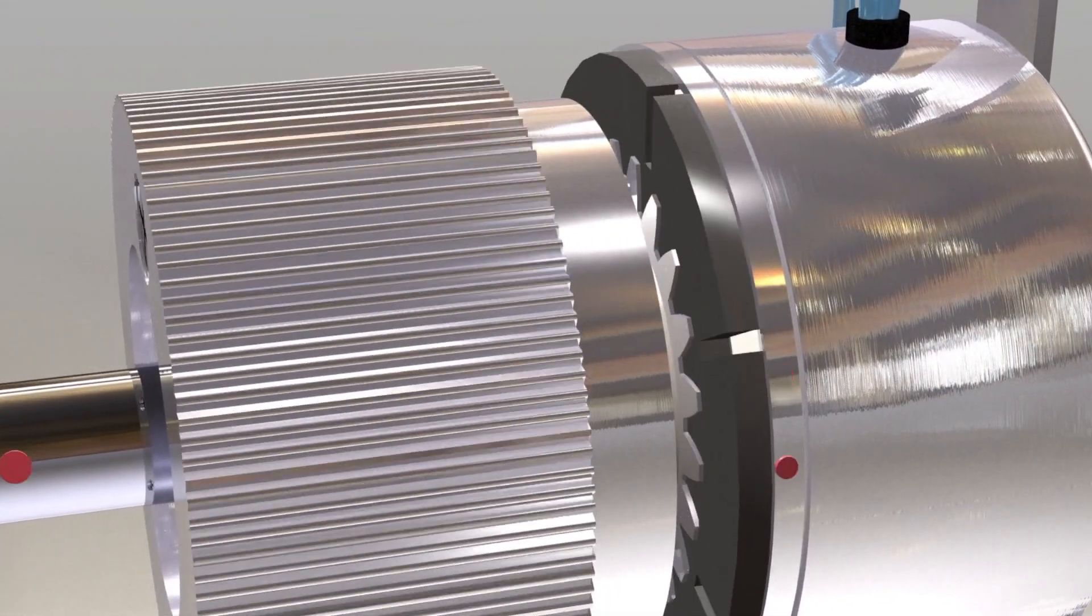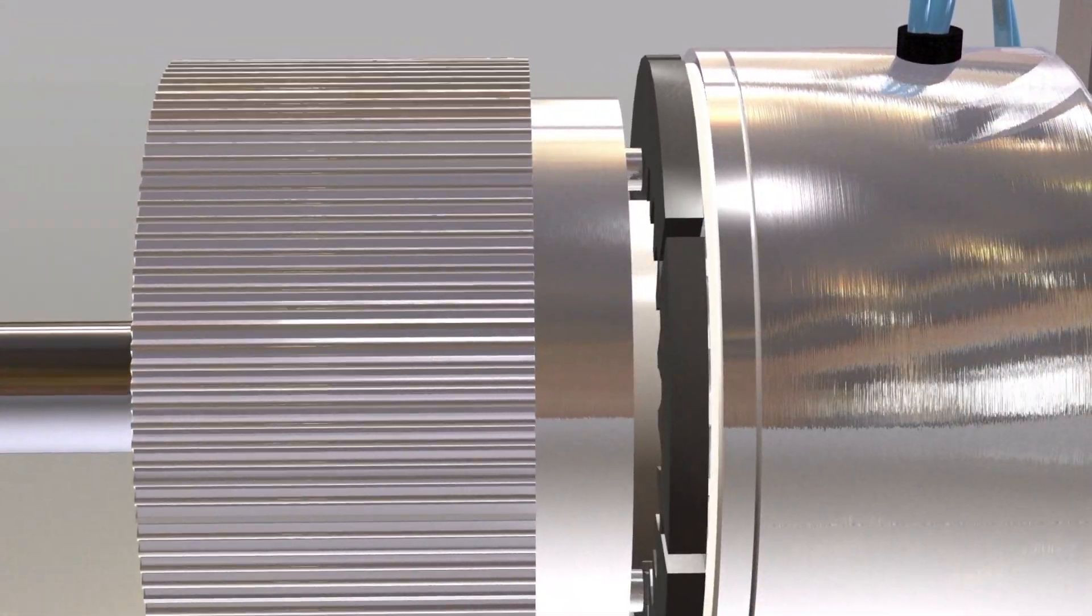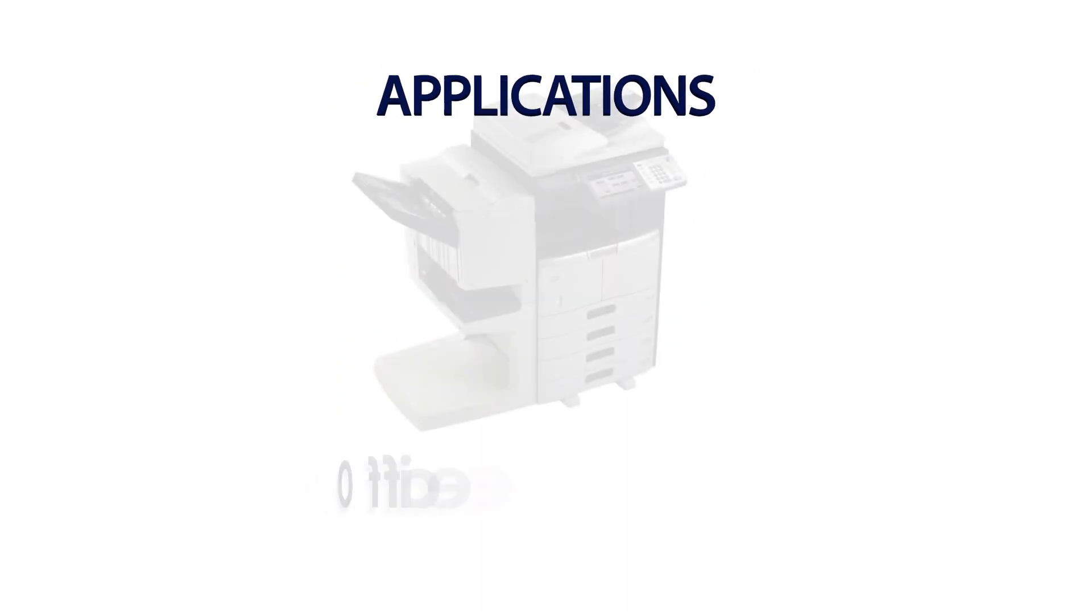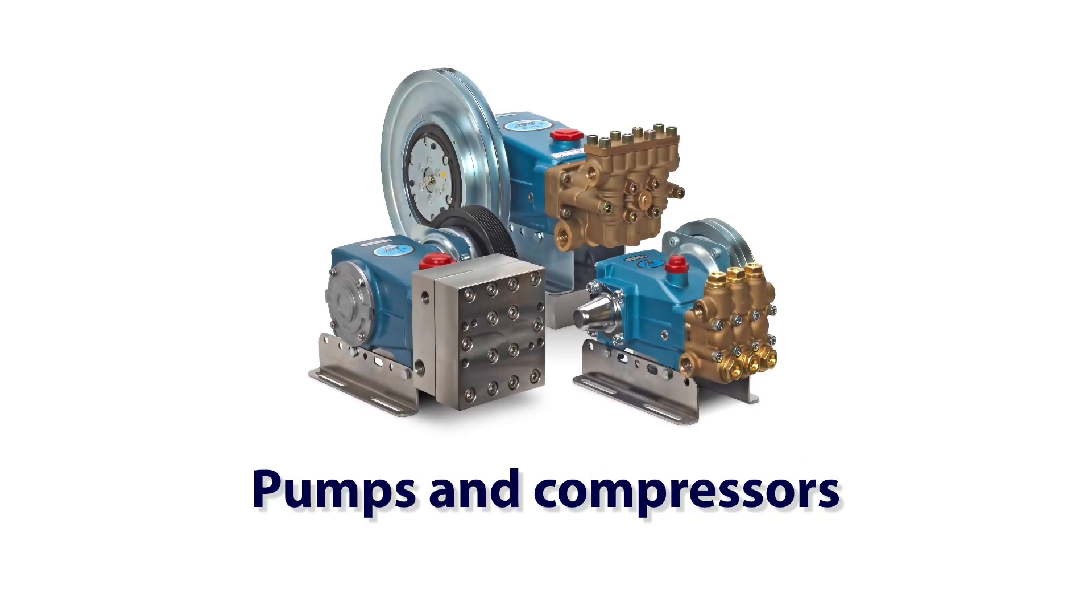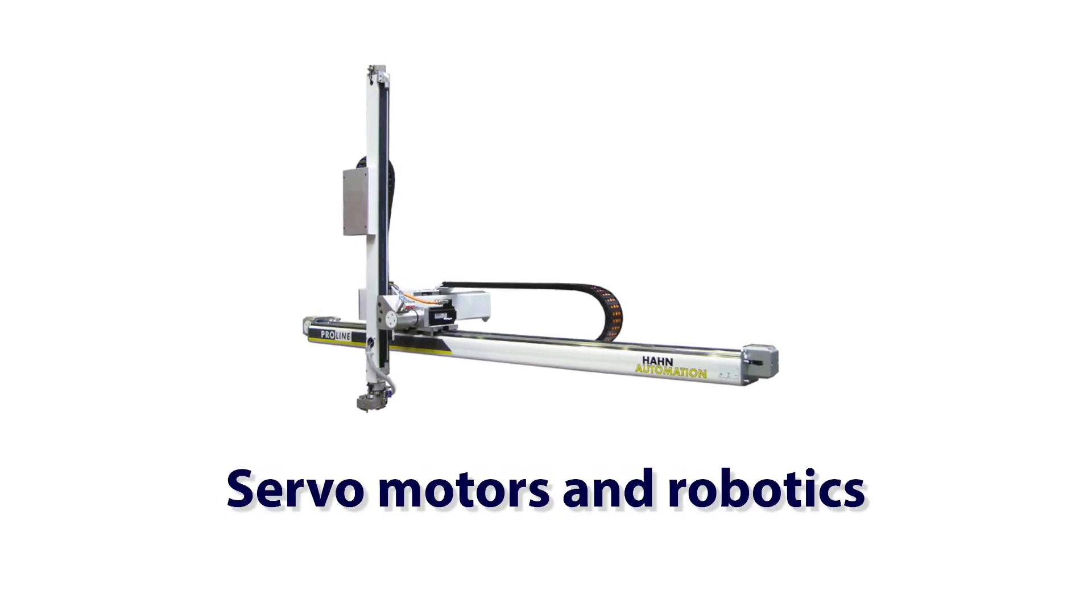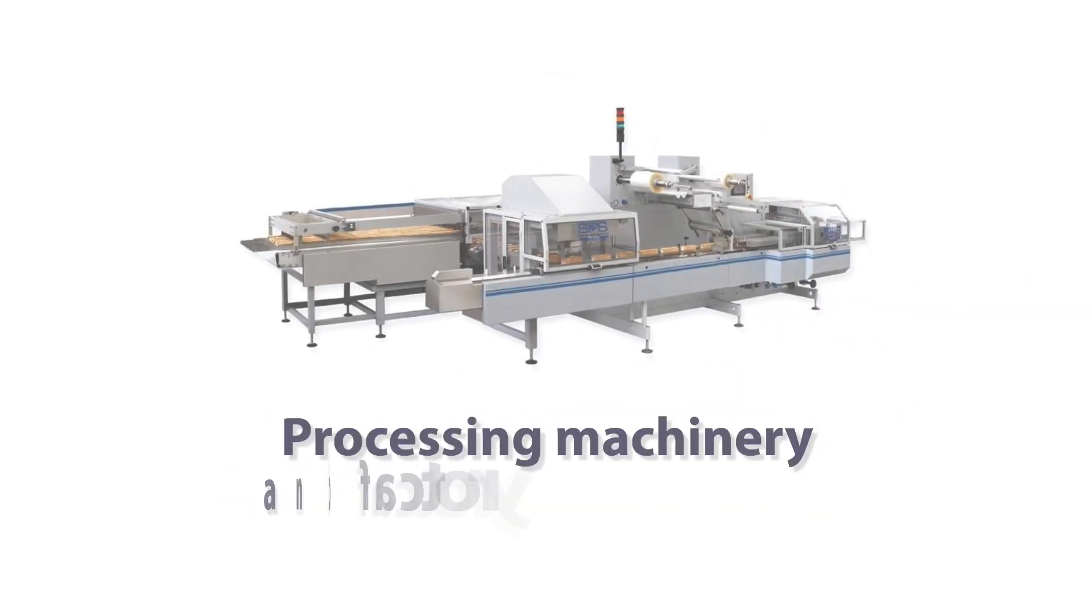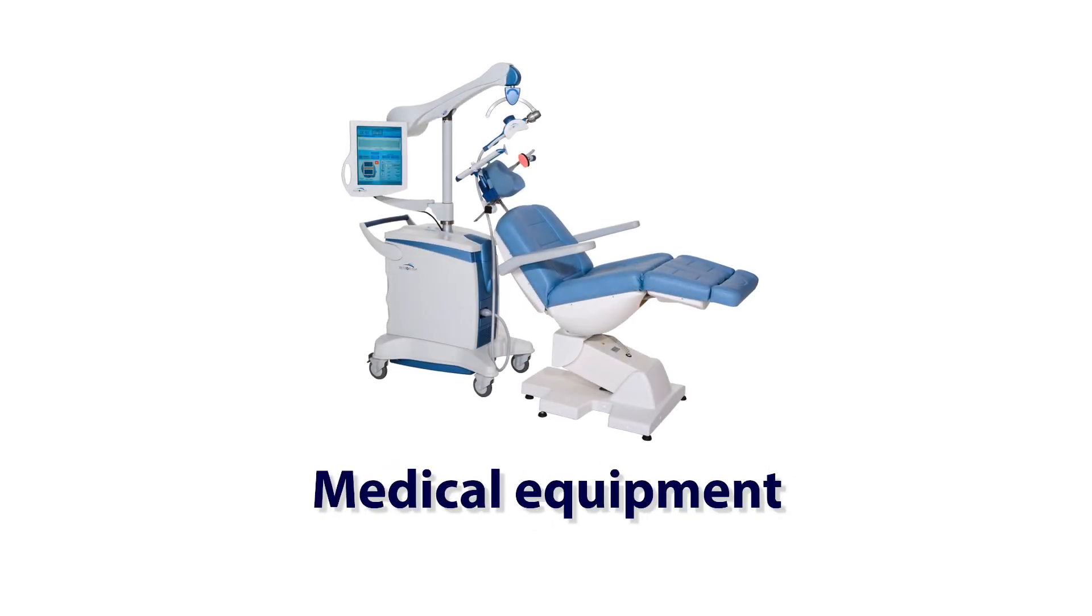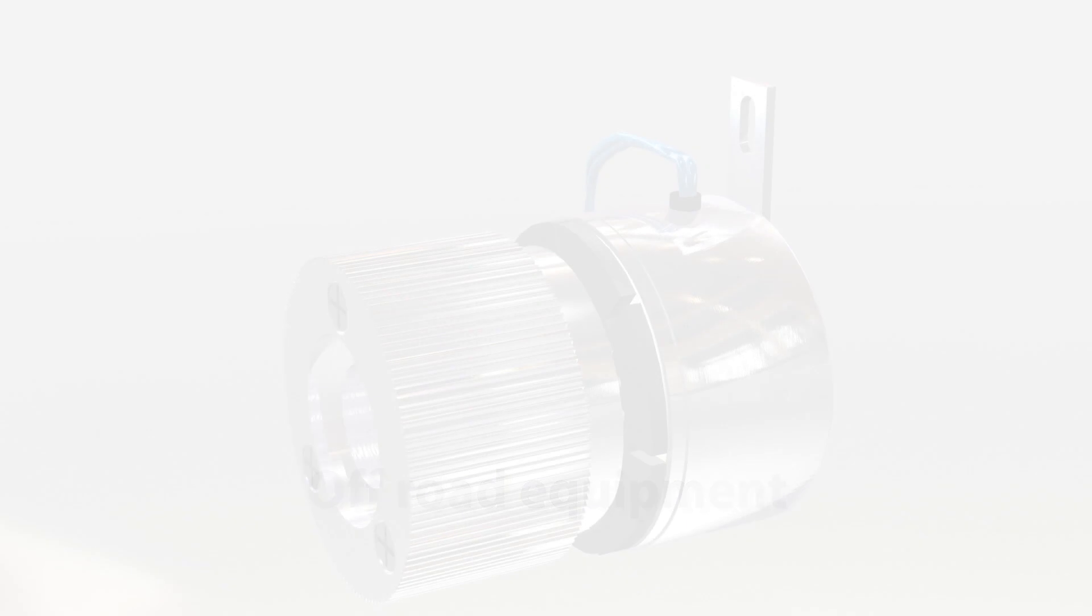Electromagnetic clutches can be found in almost any application that requires the transfer of rotary motion. Typical applications are automotive, office equipment, pumps and compressors, servo motors and robotics, outdoor power equipment, processing machinery and factory automation, medical equipment, and off-road equipment.